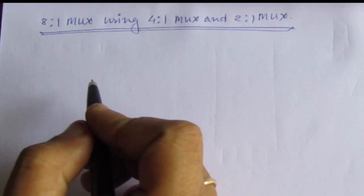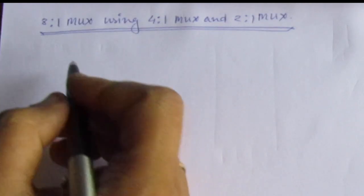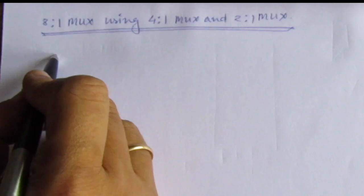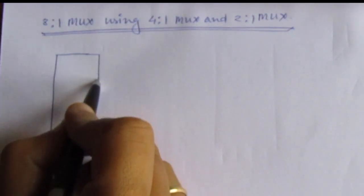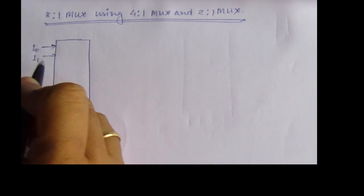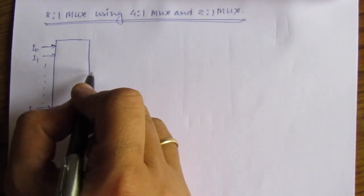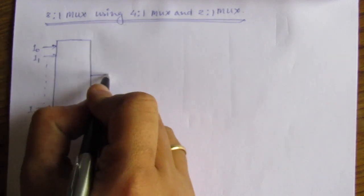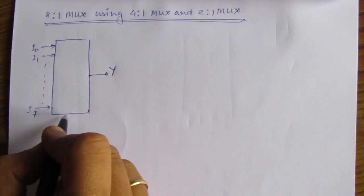Let us first draw the block diagram of the 8-to-1 multiplexer. In an 8-to-1 multiplexer, we have 8 inputs starting from I0, I1, up to I7. We have only one output Y, and we have three select lines.